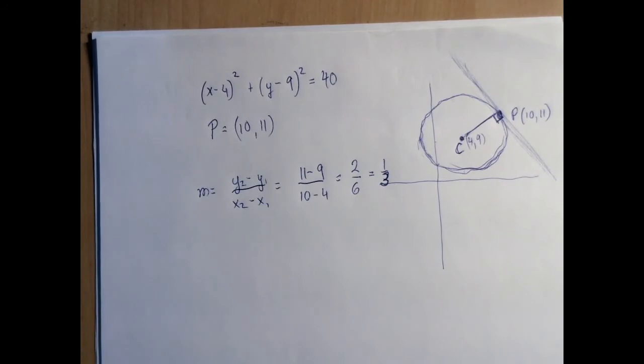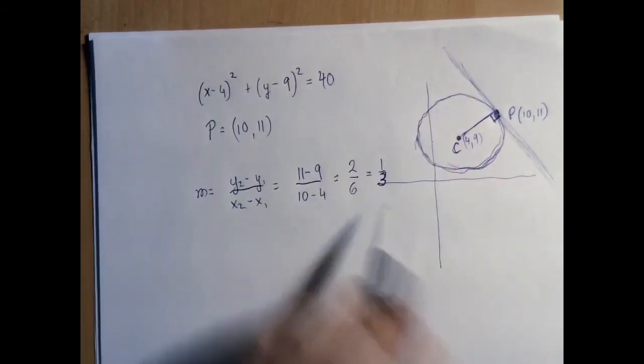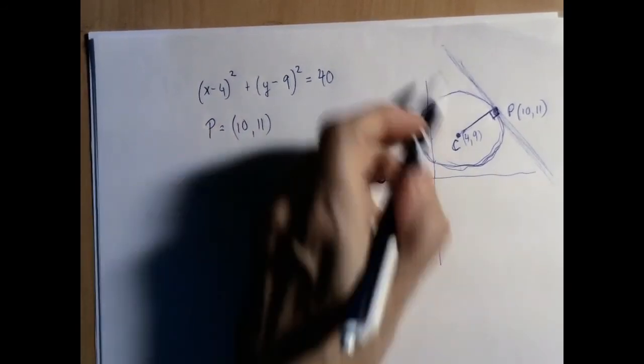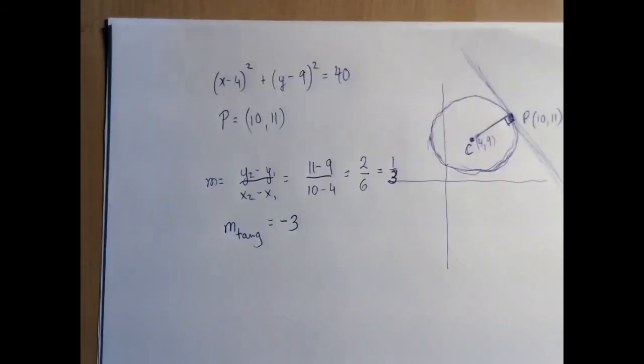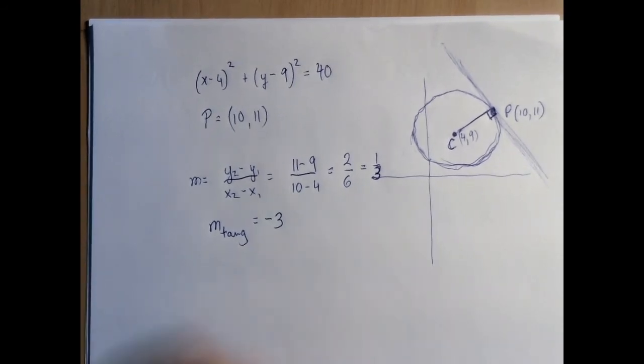Now the slope that we're looking for has to be, because they are perpendicular, the negative reciprocal of 1 third. So our slope is negative 3. And again, the picture kind of guides us, protects us from sign errors. And so now we know the tangent line has a slope of negative 3.